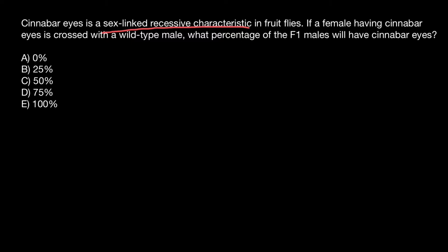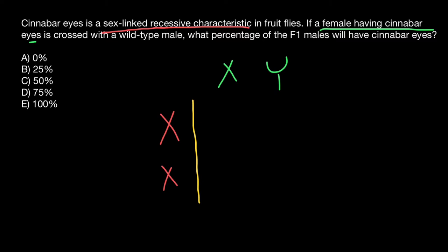We are told that the female is having cinnabar eyes. That means this female has two recessive alleles on two X chromosomes, so her genotype would be X with the recessive allele on each chromosome — shown here in red. And the male genotype is wild-type, shown in a different color, X and Y.